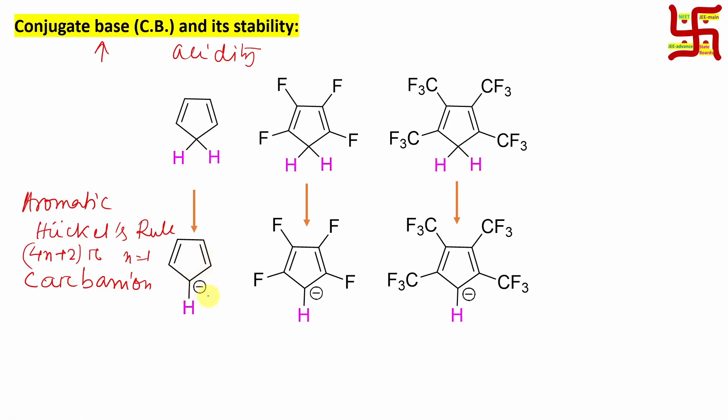Now your question may be: sir, how six pi electrons? So look at here. Here negative charge means two electrons, this double bond two electrons, this double bond two electrons, and this negative charge means two electrons in the p orbital. So they are cyclic, planar, conjugated, and four n plus two number of pi electrons are there.